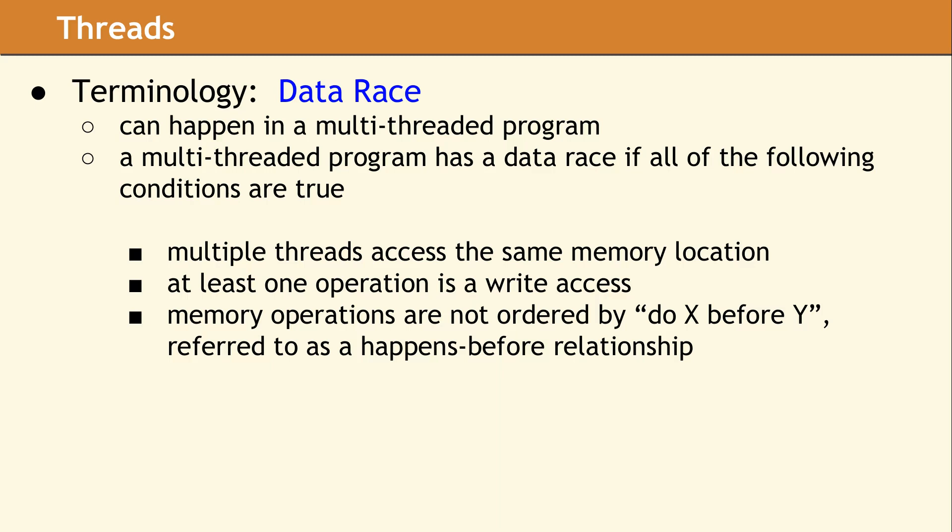As soon as you start looking at multi-threaded program design, a term you need to be aware of is data race. A data race can only occur in a multi-threaded program, and it occurs when all of these conditions happen: if you have multiple threads accessing the same memory location, at least one of those operations is a write, and there is no ordering specified on those separate operations, then you have a data race. It's called a race because conceptually it's not clear what operation happens first, and so the result is unpredictable.